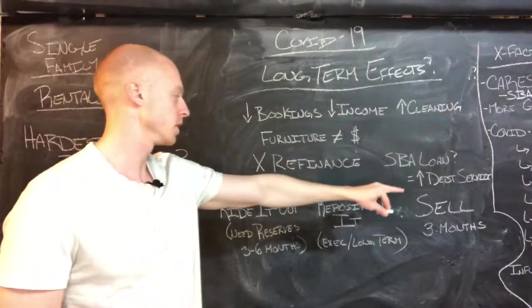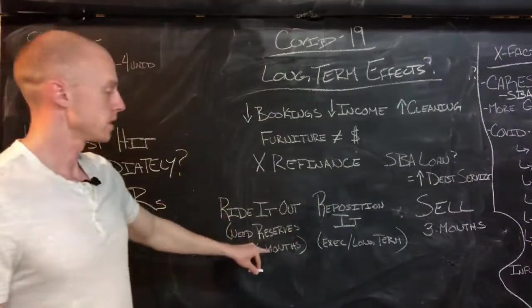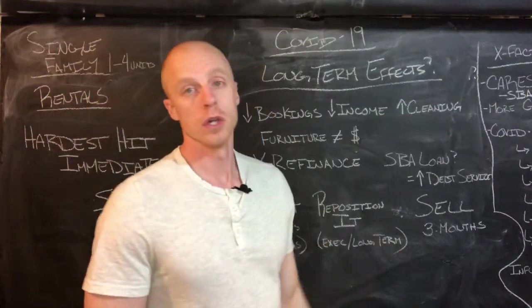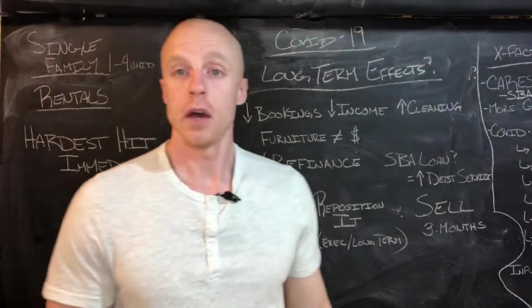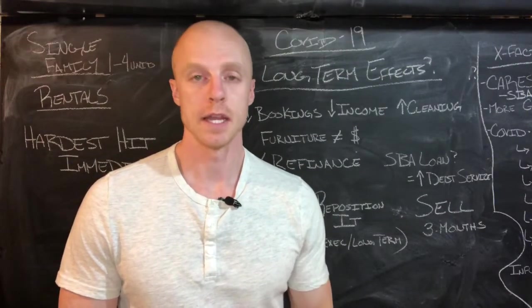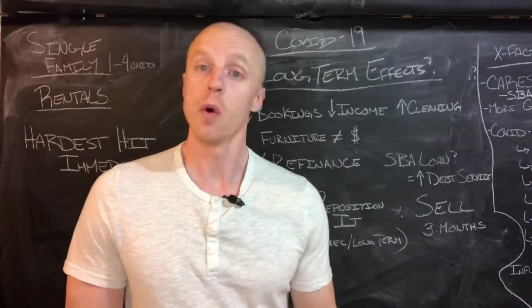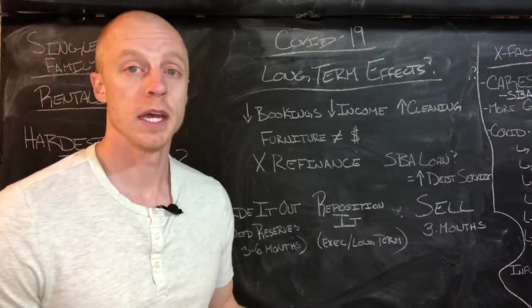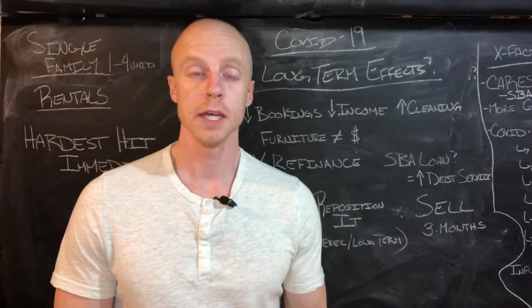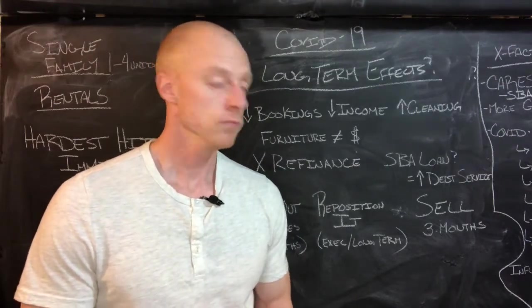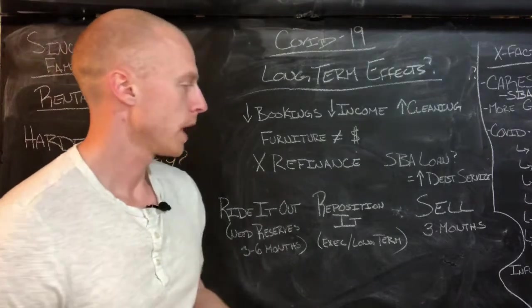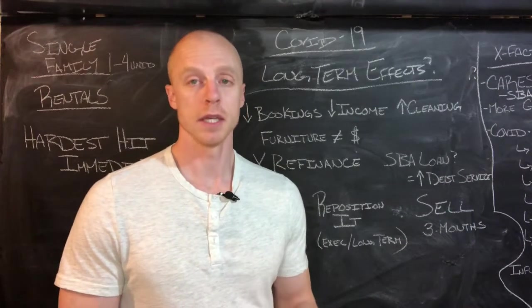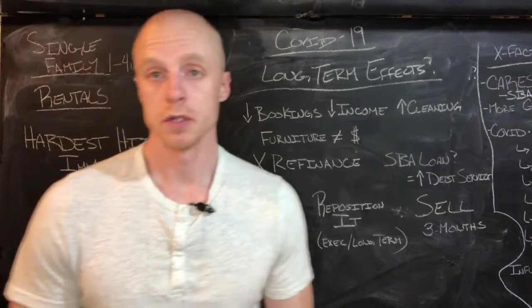But ultimately, coming back again: less bookings, less income, increased cleaning, furniture is not worth anything, you're not going to be able to refinance, you could look at an SBA loan but your debt service is going to go up. You could ride it out if you got reserves for the next three to six months, reposition as an executive suite or long-term rental, or turn around and sell it. You could turn around and sell it right now, right away, while we're getting into selling season, while values in Fort Collins have not necessarily been hit or touched yet. This could drive an increased supply of top dollar properties onto the market—who knows how many, you just don't know. But I do see it more happening in the next three to six months of these properties coming onto the market if the travel and the bookings don't reposition it or turn it into a long-term rental.